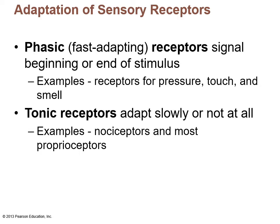Regarding adaptation — phasic versus tonic receptors — phasic receptors adapt quickly. For instance, when you first put on clothes you feel them, but after a while you don't. You're not always conscious of glasses on your nose or earrings. Tonic receptors adapt very slowly or not at all — pain receptors are hard to block out, and proprioceptors keep you consciously aware of your position in space at all times.